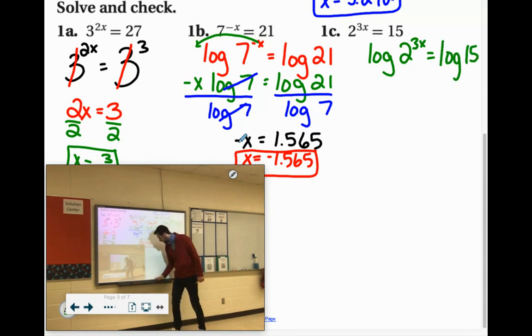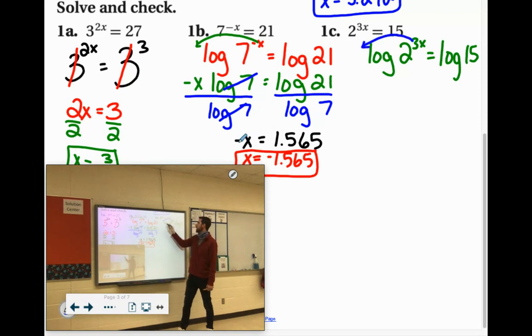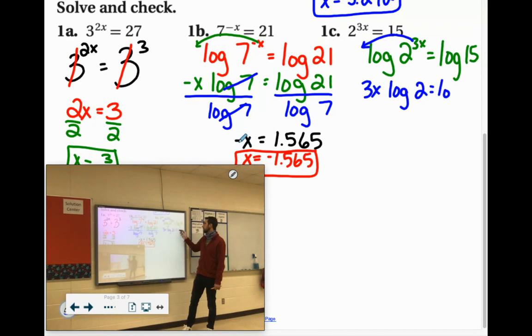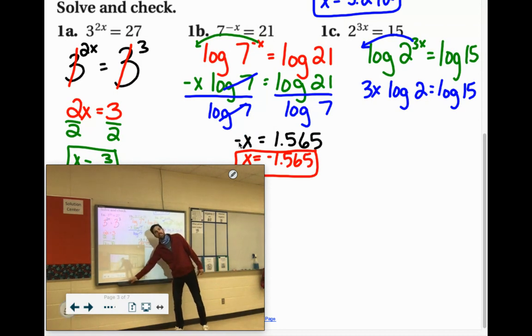We kick our exponent to the front. So it would be 3x log 2 equals log 15. We don't want that log 2. Get it out of there.